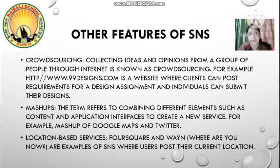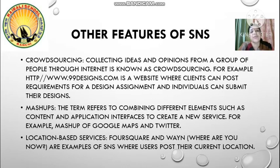Next is mashups. Mashups is a term that refers to combining different elements such as content and applications together. For example, there is a mashup of Google Maps and Twitter where you can find out the location from which data posted on Twitter has come. Google Maps helps you find the location, and Twitter gives you the content — the combination of these two is known as a mashup.